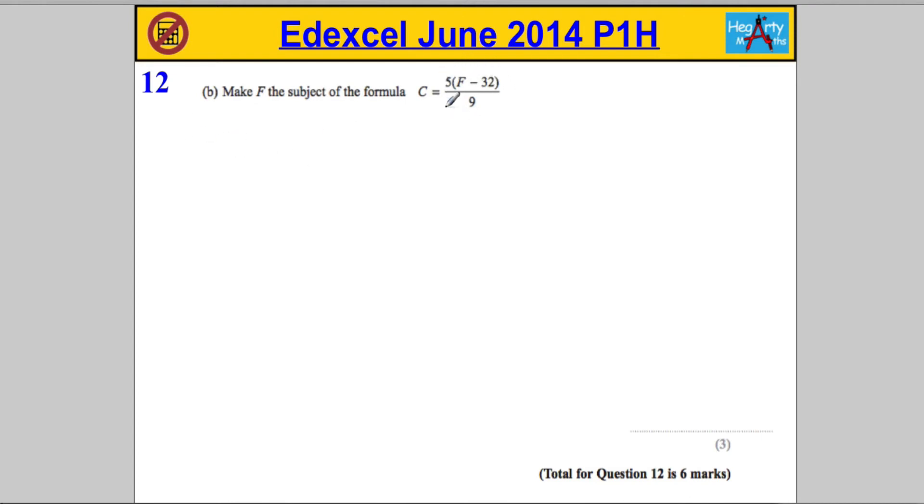I'm going to think about how this formula was constructed. So if you start with F, what's happened to F to make this expression on the right-hand side? Well, 32 was taken away from it first of all. So that would give us the F minus 32 part. Then it seems that it was times by 5 to make the 5 times the F minus 32. Then it's over 9, that means it was divided by 9. So we end up with 5 times the F minus 32 over 9.